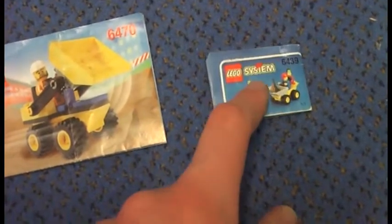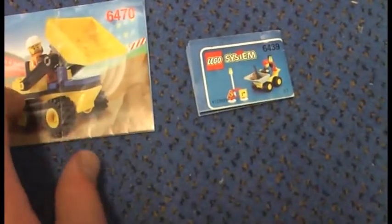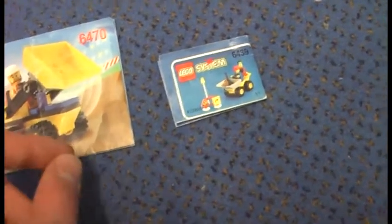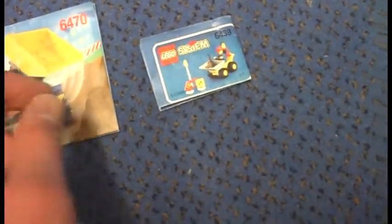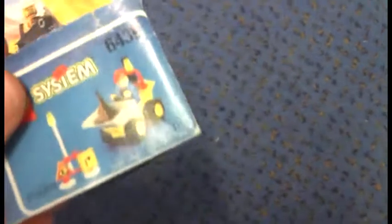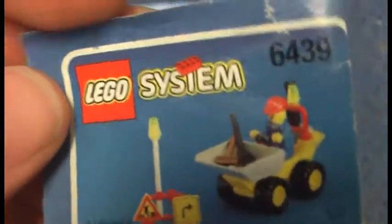This is 26 pieces, both come with one minifig and they don't have any stickers. And here is the instructions, 6439 from the Lego system.